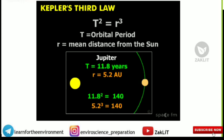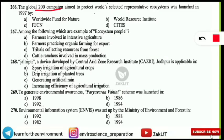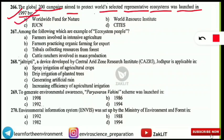First question: the Global 200 Campaign, aimed to protect the world's selected representative ecosystems, was launched in which year and by which organization? Note that it was launched in 1997 — not 1977 as the question may suggest — and it was launched by WWF, that is the Worldwide Fund for Nature.